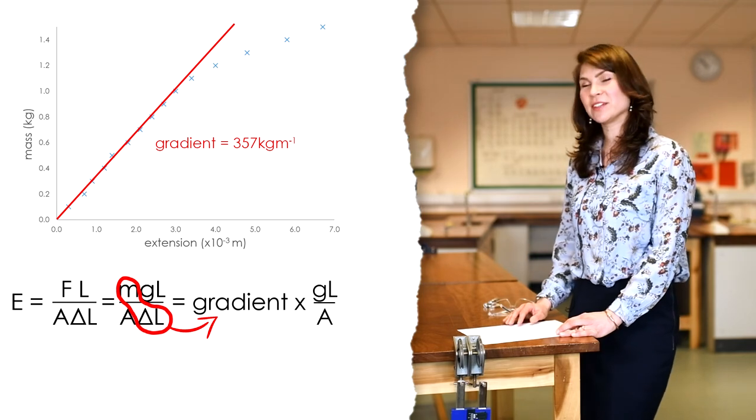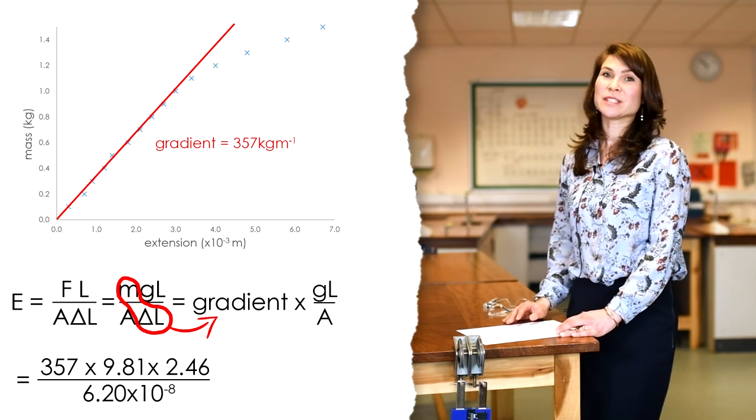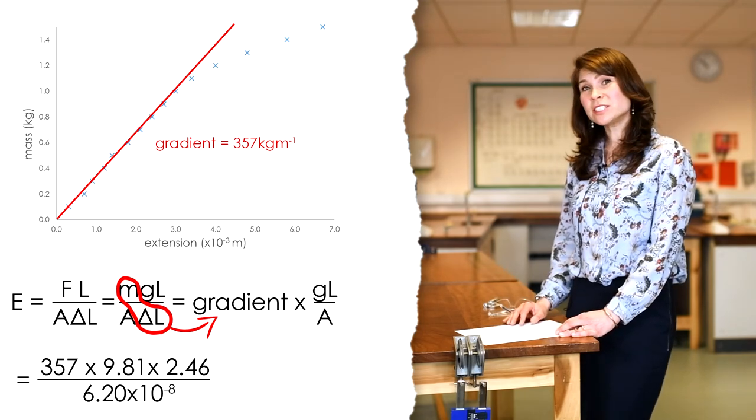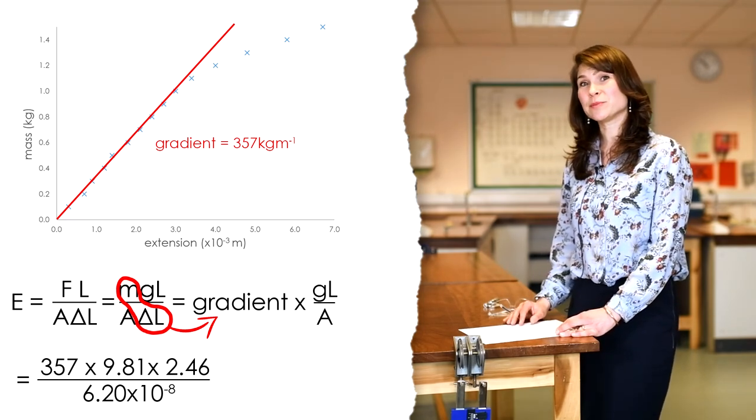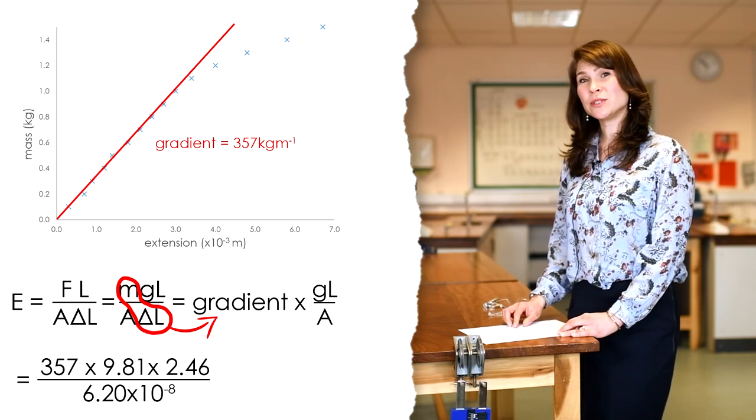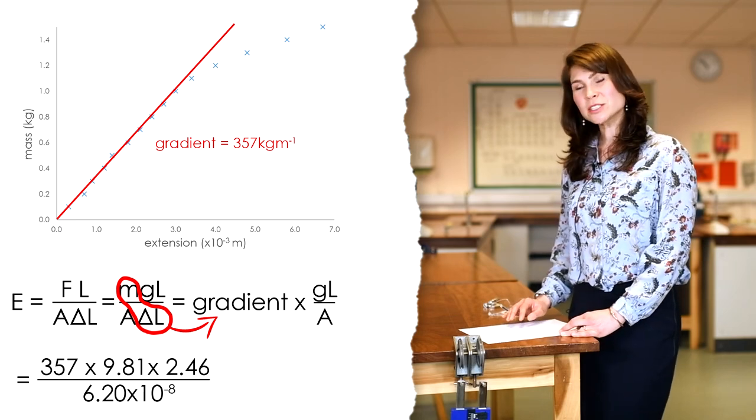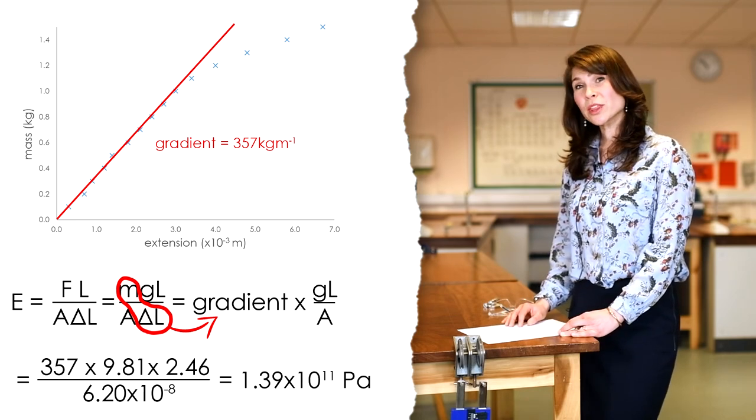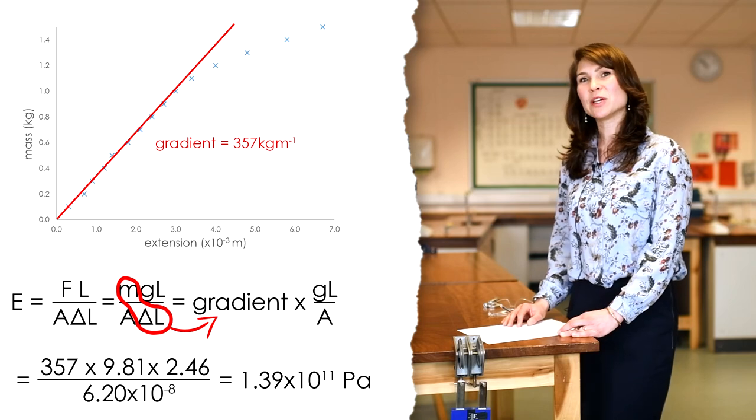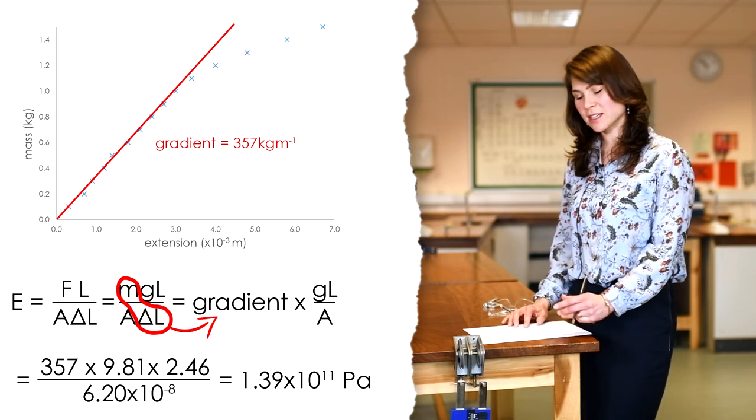Our gradient is 357 kilograms per metre, times that by g, 9.81, times it by our original length, which was 2.46 metres, and divided by our cross-sectional area, which was 6.2 times 10 to the minus 8 metres squared. And we get a value for the Young's modulus, E, of 1.39 times 10 to the 11 pascals, or 139 gigapascals.